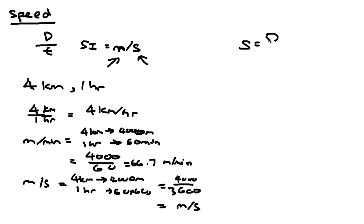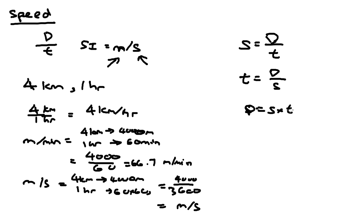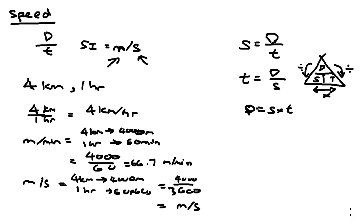Speed is directly related to distance and time. If we have distance and time, we can find speed. What if we have distance and speed — can we find time? Because these three are related, you can, as long as you have the right formula. Time is distance divided by speed, and distance is speed times time. An easy way to remember this is to use a triangle with distance at the top, and speed and time at the bottom. Speed is distance divided by time, time is distance divided by speed, and distance is speed times time.